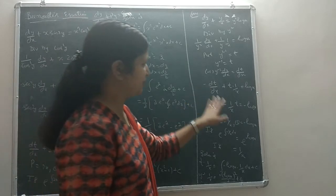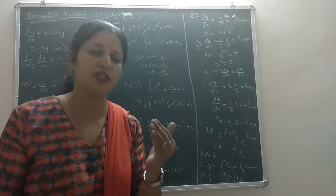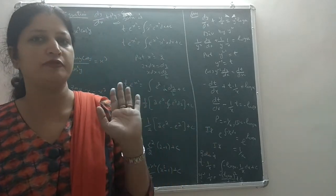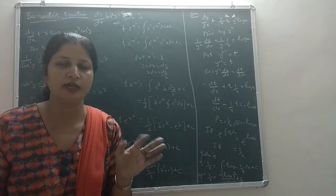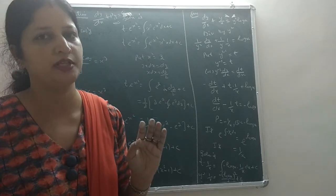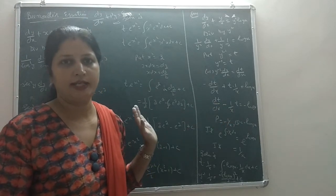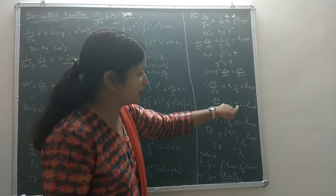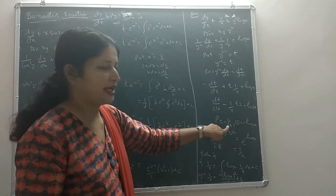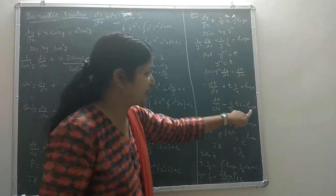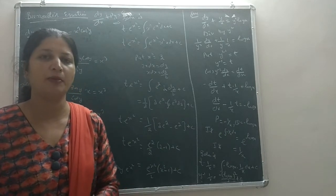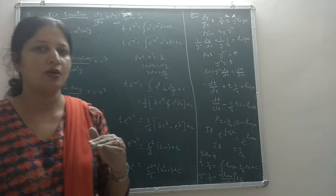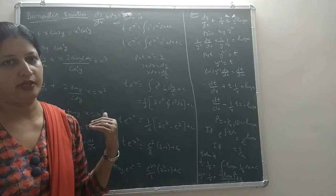Because the linear equation requires the coefficient of dt/dx to be exactly one with no negative sign, we multiply through by minus one. This gives dt/dx minus t/x equals minus log(x). So P equals minus 1/x and Q equals minus log(x).